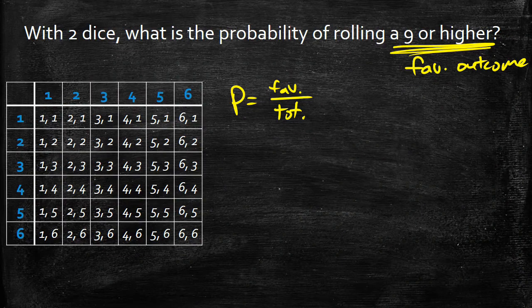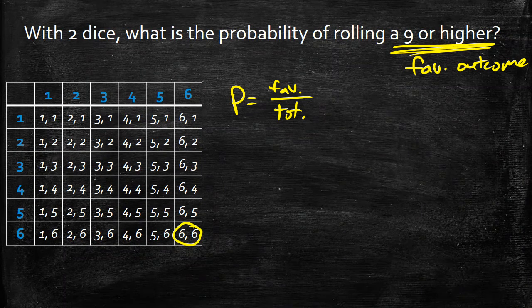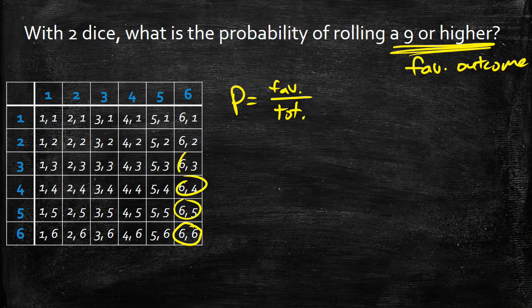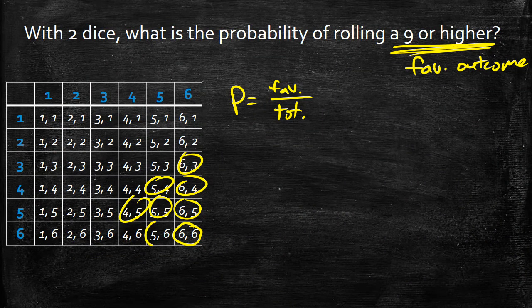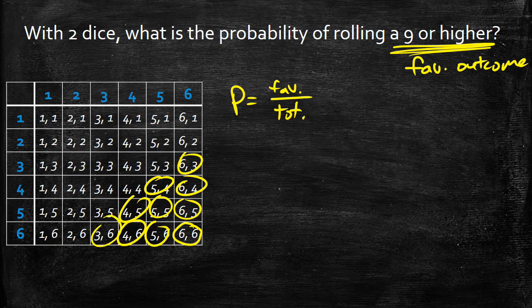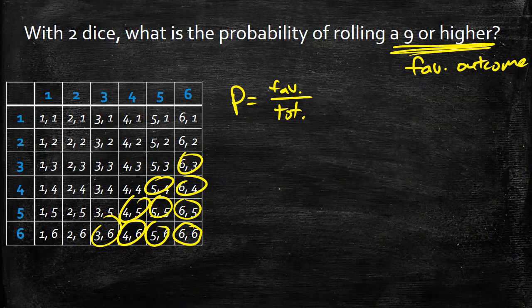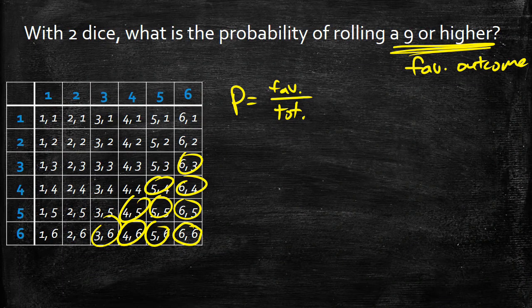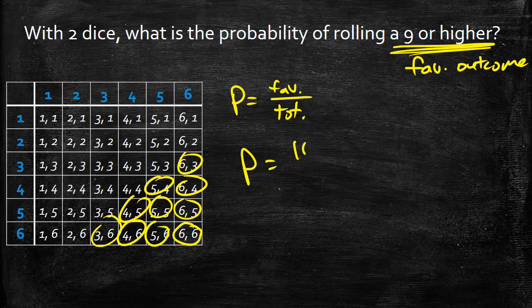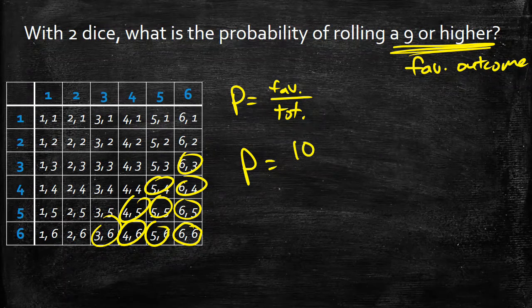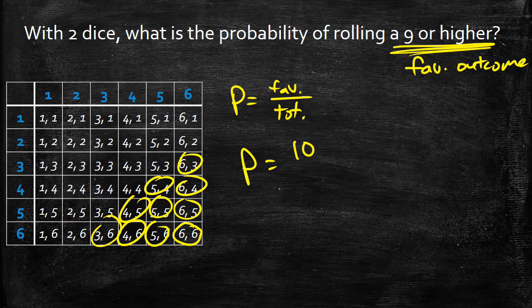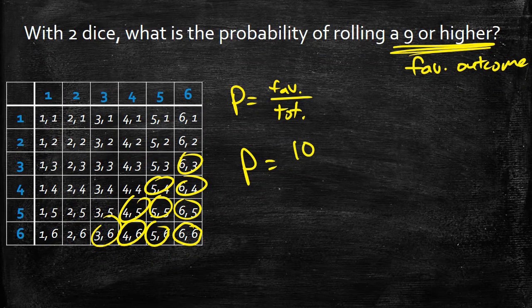So we need to figure out which outcomes actually have a nine or higher. I can go through this one by one, but I'm going to start in the bottom right here because I know that 6,6 is 12. So that's going to be bigger than nine. And then I can continue to circle all the ones that do give me a result of nine or higher. So it could include a nine also. That's why I included 6,3, 5,4, 4,5, and 3,6. I count these up. I know I got 1, 2, 3, 4, 5, 6, 7, 8, 9, 10.